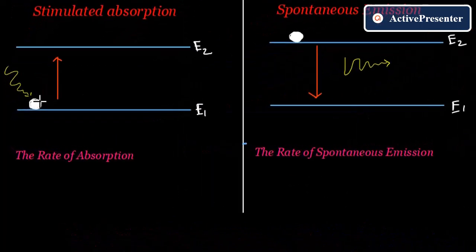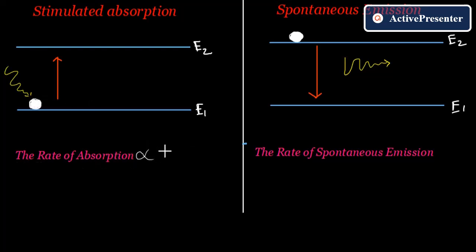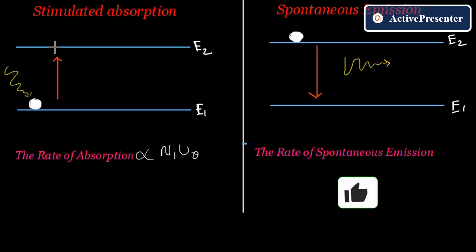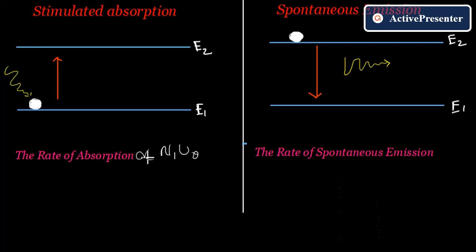In the case of stimulated absorption, when the electron stays at the ground state energy level, the rate of absorption is directly proportional to N1 — the number of electrons in ground state E1 — and to u(ν), the energy density. So the rate of absorption is proportional to N1·u(ν).